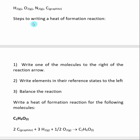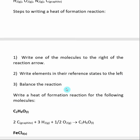The rules to write a heat of formation reaction: What you do is you write one molecule or whatever we're interested in to the right of the arrow. Then look at the elements that are inside of your molecule of interest and write the elements in their reference state to the left.